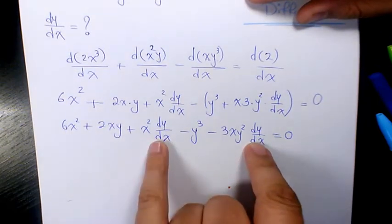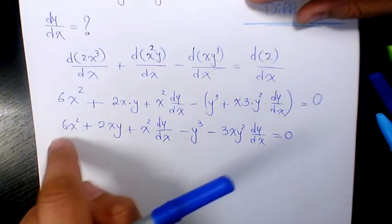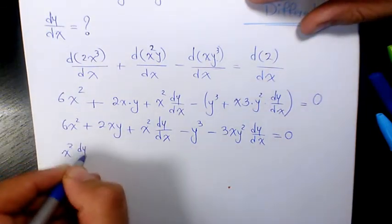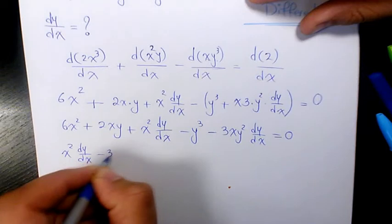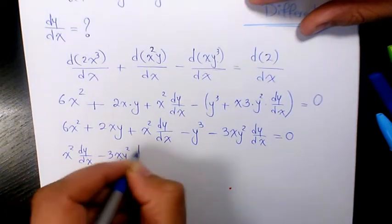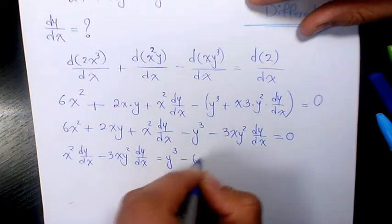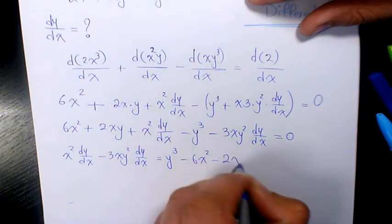Now I'm going to keep the dy/dx terms on this side and move the other three terms to the right hand side, so it's going to be x² dy/dx - 3xy² dy/dx = y³ - 6x² - 2xy.